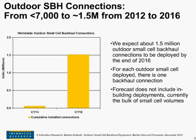This chart shows the Infinetics forecast for outdoor small cell backhaul connections, assuming one connection per small cell. The number of connections is modest right now at just over 7,000 worldwide, but this growth is already happening. We're going to see these connections grow to around 1.5 million outdoor small cell backhaul connections by 2016. But the market will only grow to this extent if cost-effective and robust backhaul solutions are available for small cells.